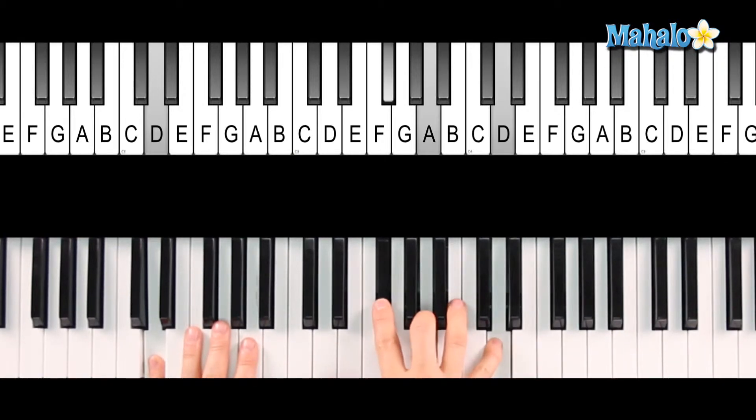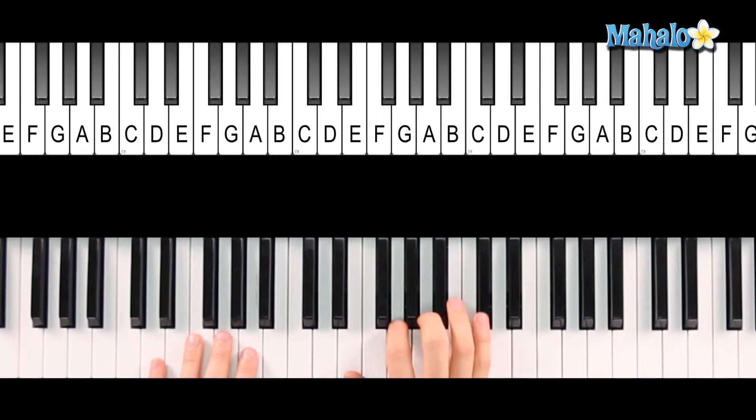D, F sharp, A, B, and D. So how this works is D, A, A flat, A, B flat, A. And that's your A7.